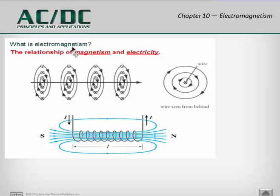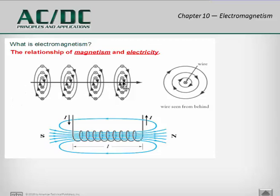We're going to start by asking: what is electromagnetism? Electromagnetism is the relationship of magnetism and electricity. The word electromagnetism is made of two words — electro for electricity and magnetism for magnets. These two forces of magnetism and electricity are inseparable. Anytime current travels through an electrical wire there is a magnetic field associated with that wire.